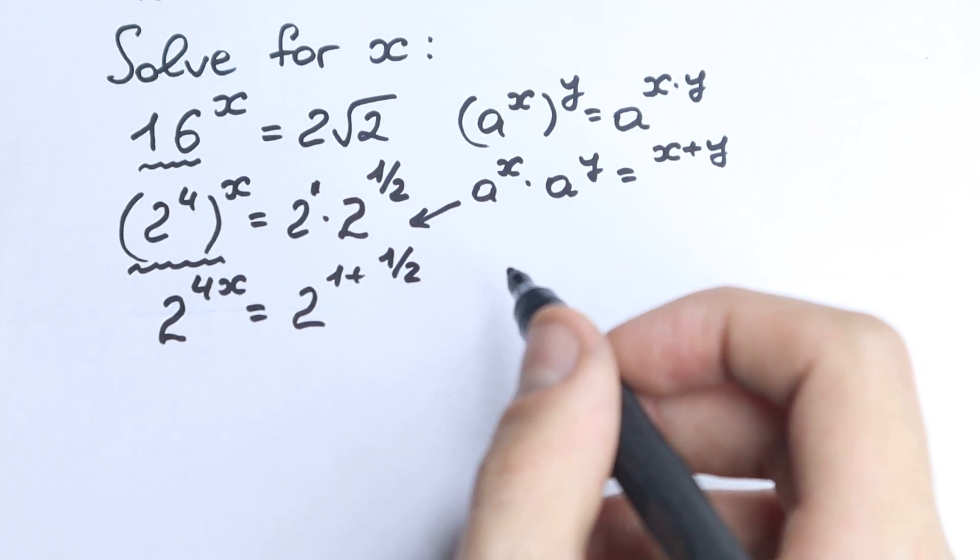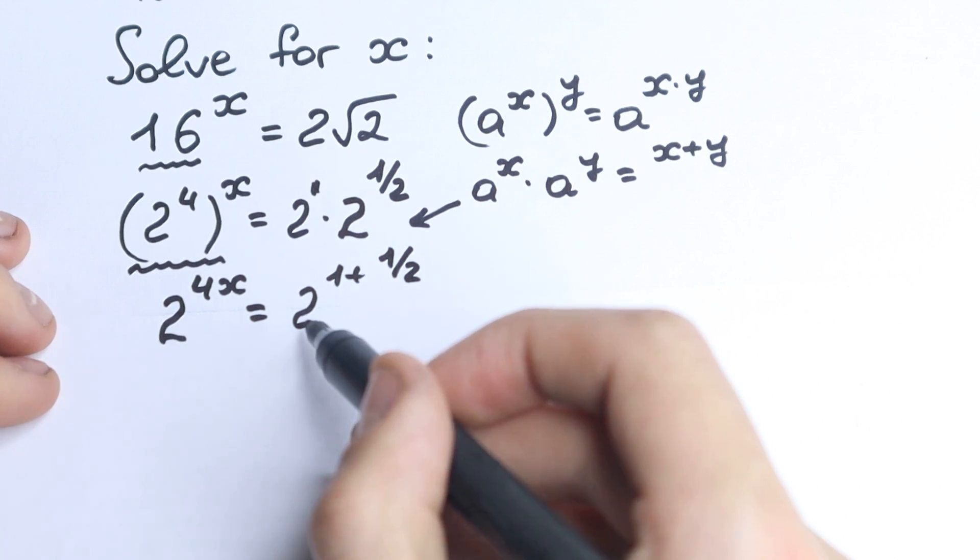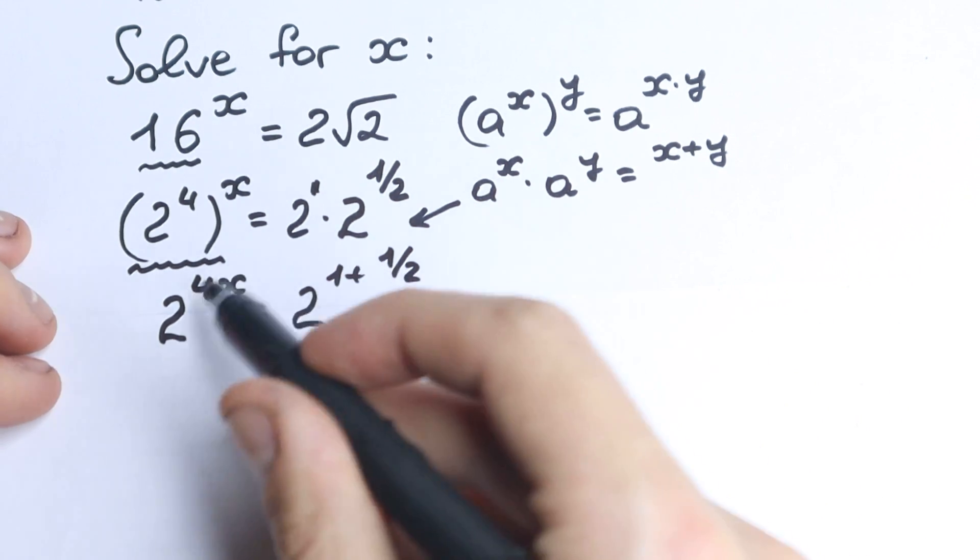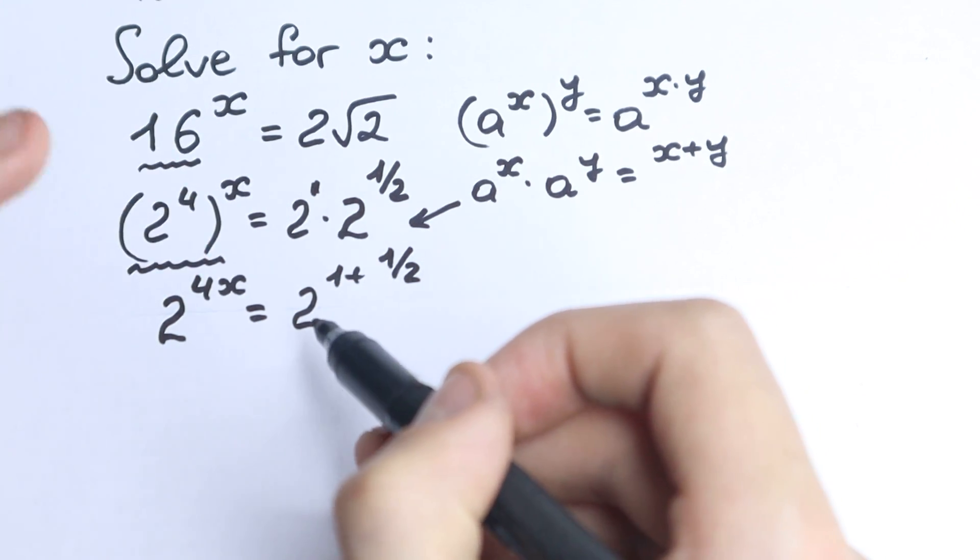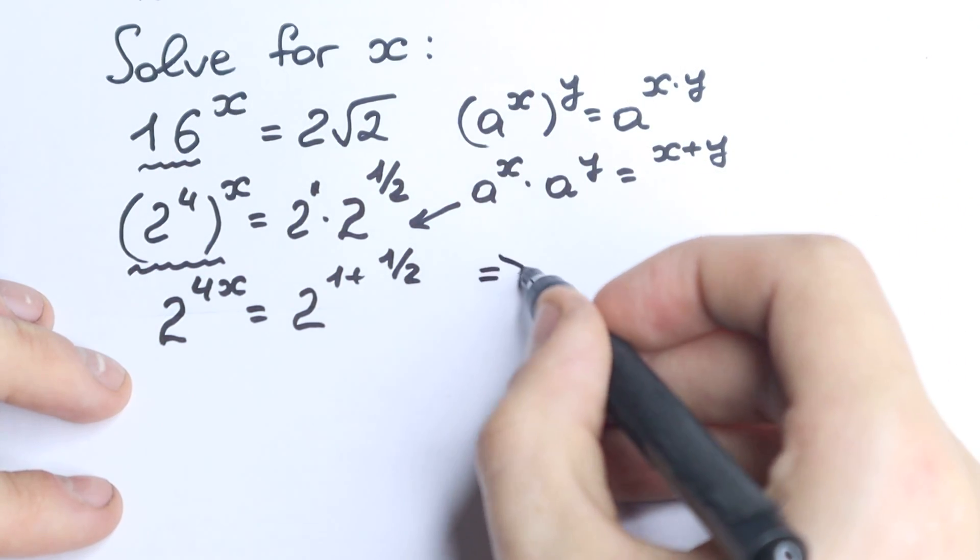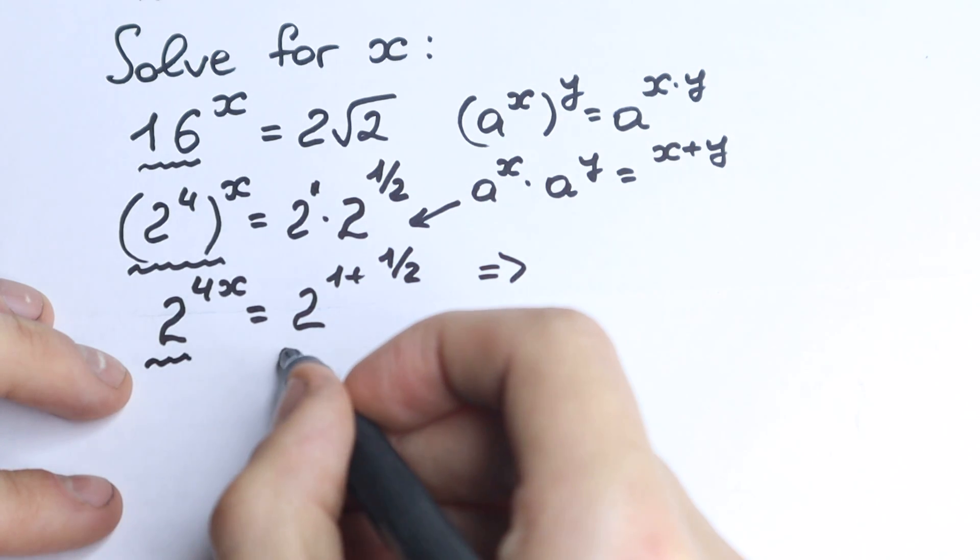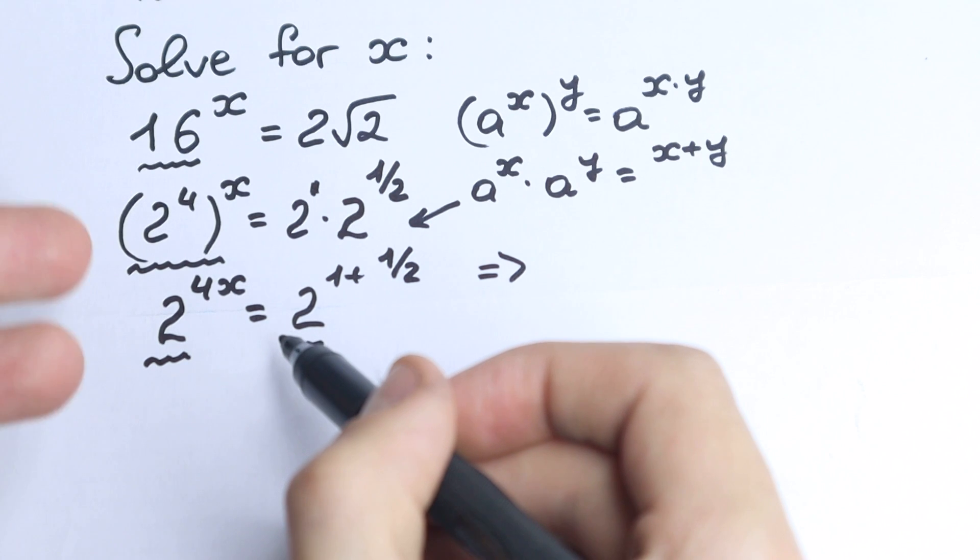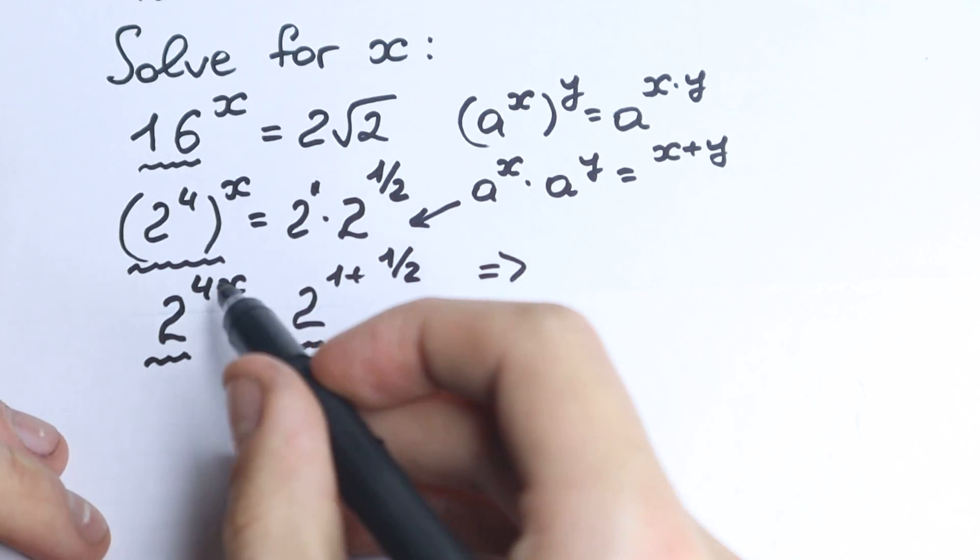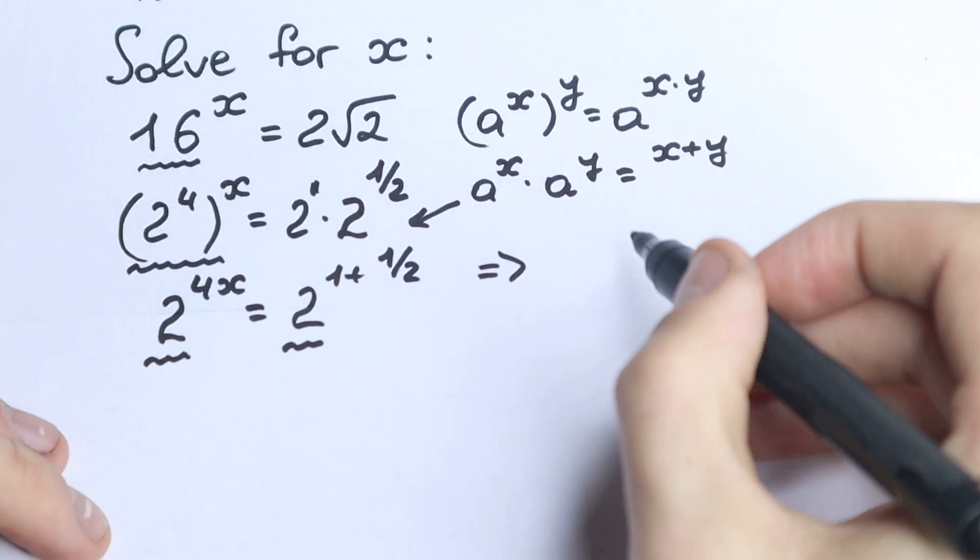And if you know a little bit about algebra, you know that if we have the same basis, we can easily write an equation with our exponent. Or in another way, if we have the same exponent, we can write an equation with our basis. But if we have the same basis, we can easily write an equation with our exponent. If we have the same powers, we'll have, of course, equality all the time.